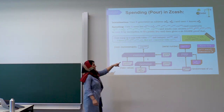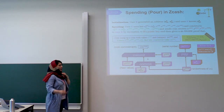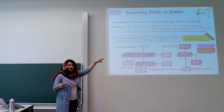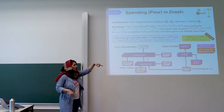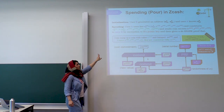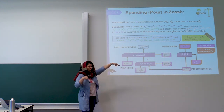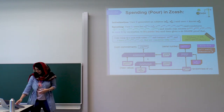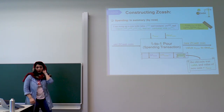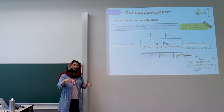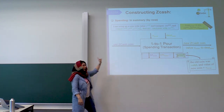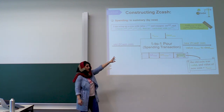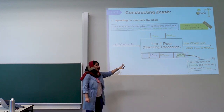I know some randomnesses for my coin that are consistent with the old commitment. Now I want to give an intuition behind the Pour algorithm. One old coin comes in, one new coin goes out. There are two value and public address destinations assigned to the new coin. Here you can see the serial number of the old coin and the commitment of the new coin, and a proof which says the old coin had a value, and the value of the old coin equals the value of the new coin.